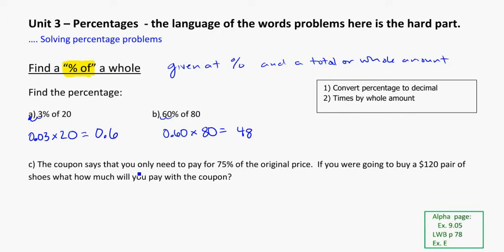The next one: the coupon says that you only need to pay 75% of the original price. If you're going to buy a $120 pair of shoes, how much will you pay with the coupon? The keywords here: 75% of the original price. And $120, that's the original or whole amount.